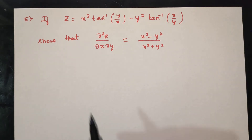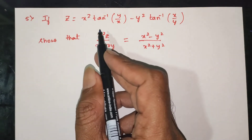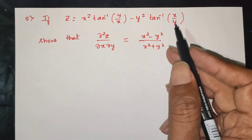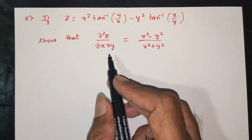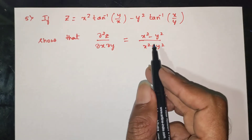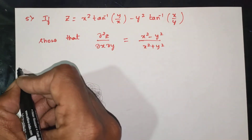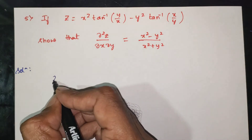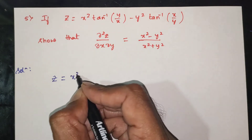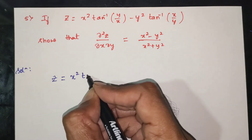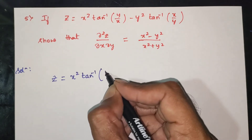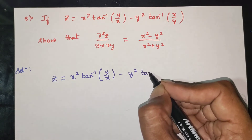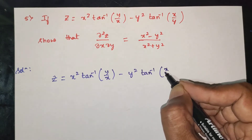Next question: if z is equal to x square into tan inverse of y by x, minus y square into tan inverse of x by y, show that dou square z by dou x dou y is equal to x square minus y square, divided by x square plus y square.